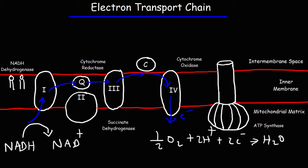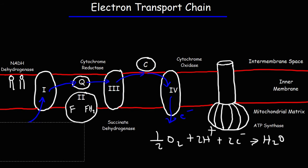The other electron carrier to discuss is FADH2. FAD and FADH2 are bound to the inner membrane — they're part of complex two. In step seven of the Krebs cycle, succinate converts into fumarate, giving up electrons and hydrogen, converting FAD into FADH2. Succinate dehydrogenase, complex two, is the enzyme that removes hydrogens from succinate converting it to fumarate, and those hydrogen atoms are transferred to FADH2.